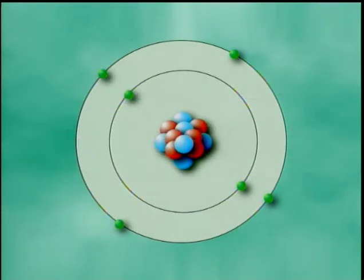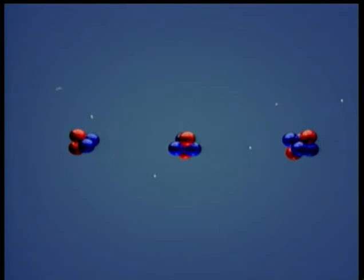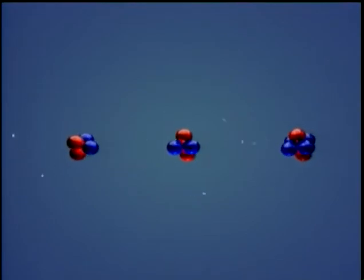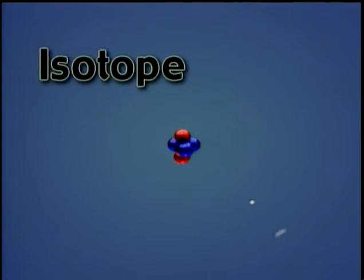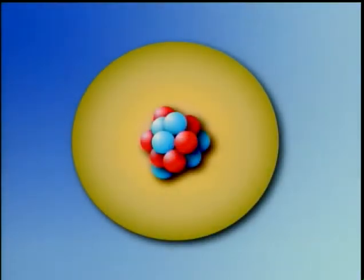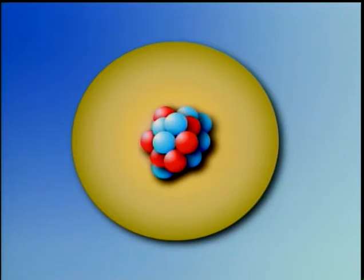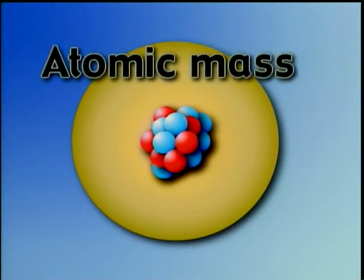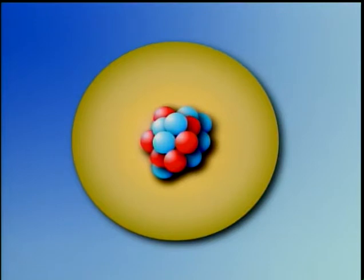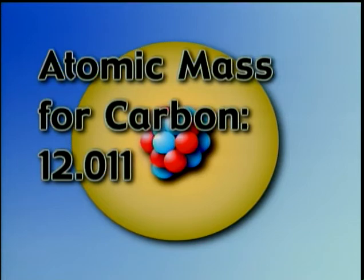Surprisingly, not all carbon atoms have the same mass. All atoms of the same kind of element also do not have the same mass. This is because some elements exist as isotopes. Isotopes are atoms of the same element that have differing numbers of neutrons. For example, carbon may have six neutrons or eight neutrons. As a result, the atomic mass of a given element is the average of all the isotopes of that element. Since the atomic mass is a weighted average, it's not usually an even number, but instead a number with a decimal. The atomic mass for carbon, for example, is 12.011 amu's.